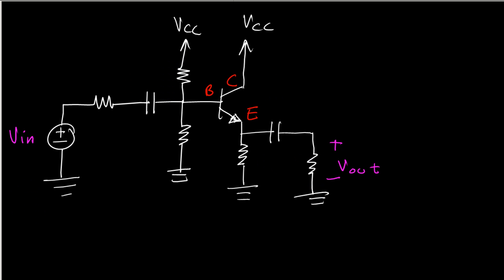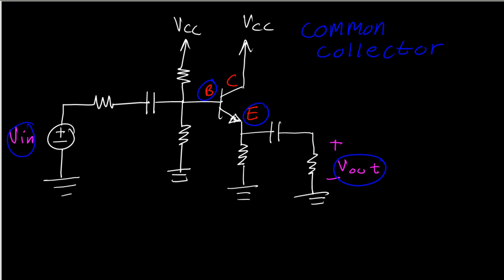What about this one? Same thing — we have the output connected to the emitter, the input connected to the base, so this is a common collector. Also known as the emitter follower.